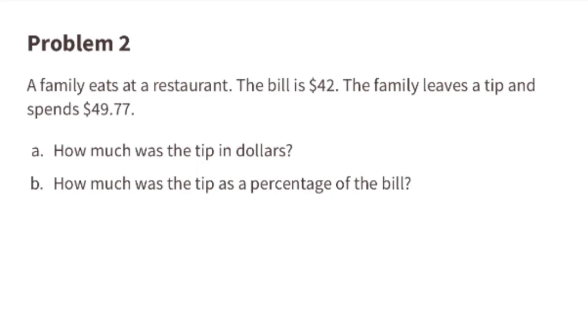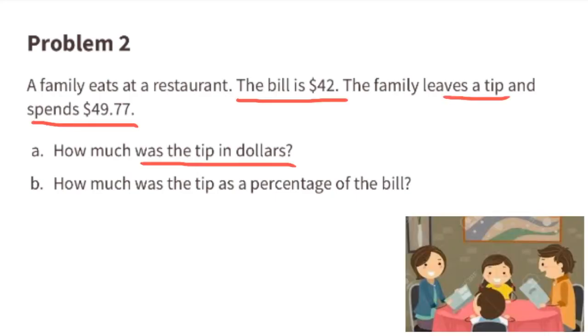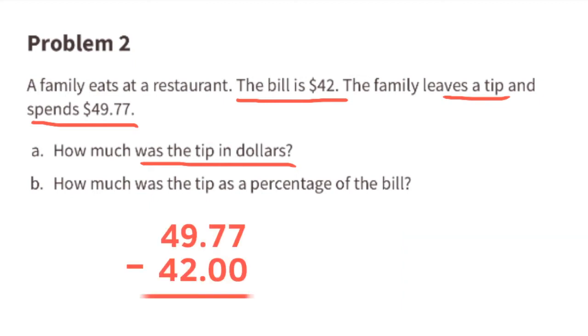Problem number two: A family eats at a restaurant. The bill is $42. The family leaves a tip and spends $49.77. Part a: How much was the tip in dollars? If the family spends a total of $49.77, we can subtract the amount of the bill, $42, to figure out how much the tip was. 49.77 minus 42 equals $7.77. The tip in dollars was $7.77.